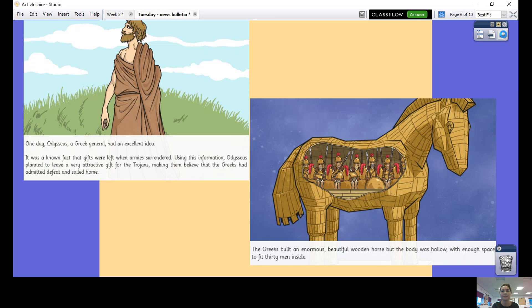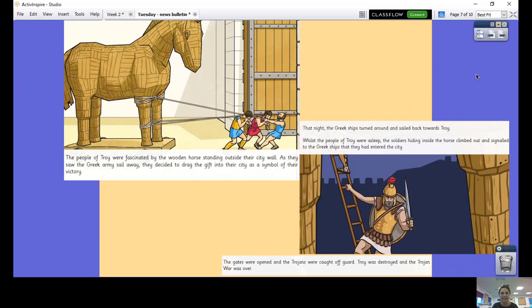Let's see what happens next. The people of Troy were fascinated by the wooden horse standing outside their city wall. As they saw the Greek army sail away, they decided to drag the gift into their city as a symbol of their victory. That night the Greek ships turned around and sailed back towards Troy. Whilst the people of Troy were asleep, the soldiers hiding inside the horse climbed out and signaled to the Greek ships that they had entered the city. The gates were opened and the Trojans were caught off guard. Troy was destroyed and the Trojan War was over.